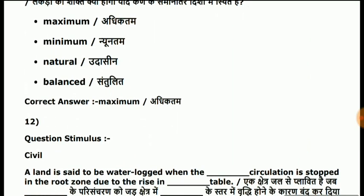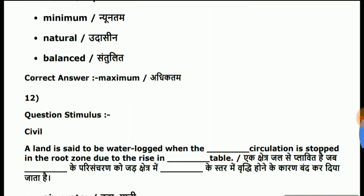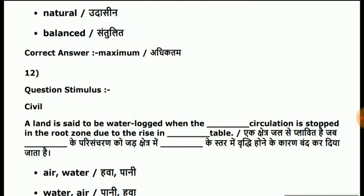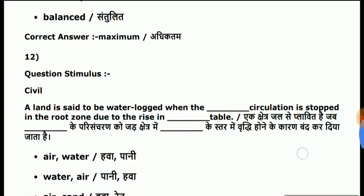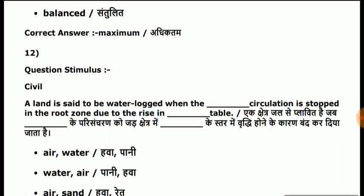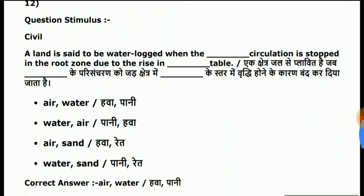What is the strength of timber if it is in the direction parallel to the grain? — Maximum. A land is said to be waterlogged when the circular circulation is stopped in the root zone due to the rise in air and water.